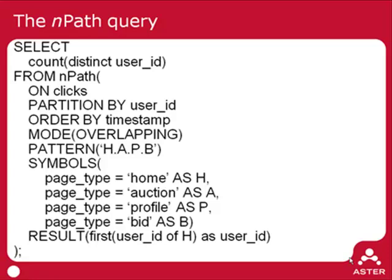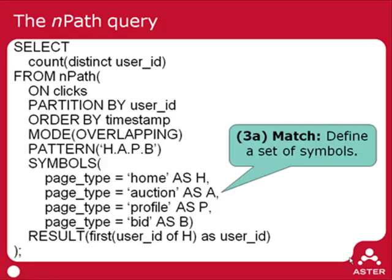Once we have this ordered sequence, we need to define the pattern we're interested in. The first step is defining the set of symbols. We look at each individual click and label it with zero or more symbols. In this case, because these symbols are disjoint, there'll be at most one. So if the page type is home, we label it H; if auction, A; if profile, P; and if bid, B. So every click gets labeled with either H, A, P, B, or nothing.